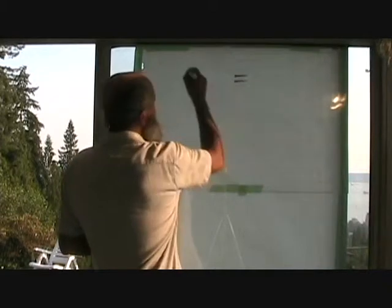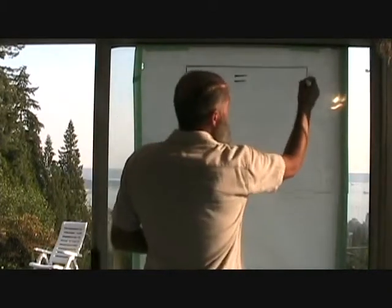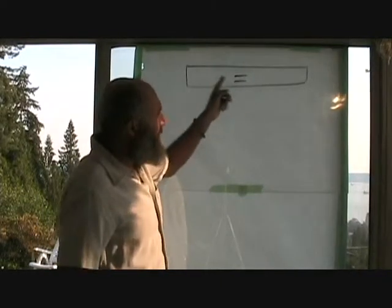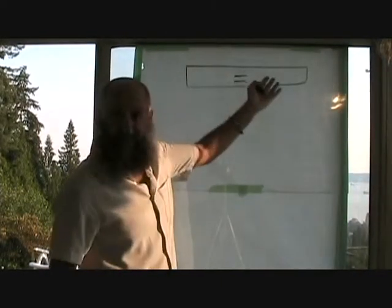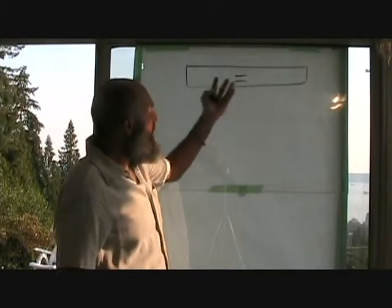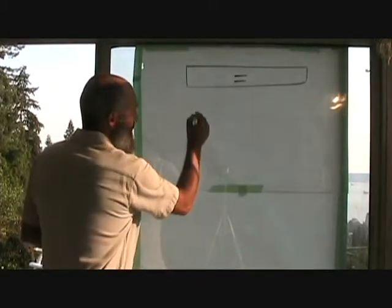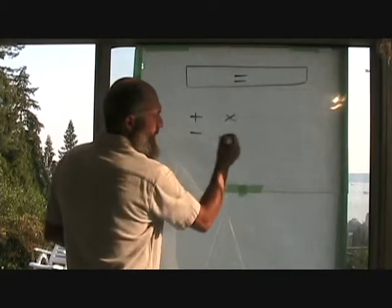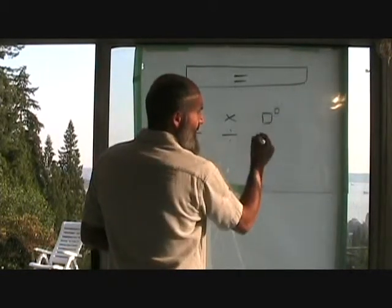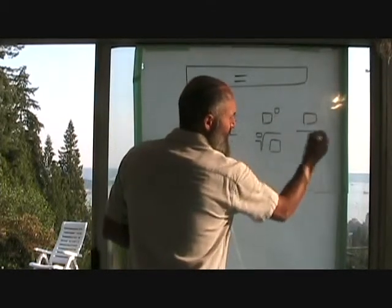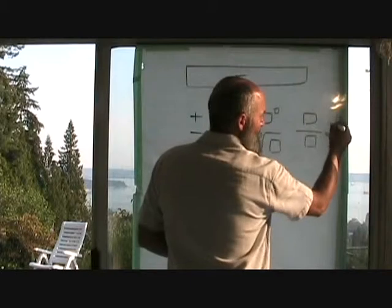So far, we've learned how to solve simple equations, where we're given an equation with a single term on this side or multiple terms on this side, where we're able to take the rules that we learned for addition and subtraction, multiplication and division, exponents and radicals, and using the shortcut of cross-multiplication.